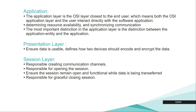Let's take a brief look at application, presentation, and session. As a network engineer, we are not going to interact with those layers directly. The application layer is the closest layer to the end user, meaning the OSI application layer is where users interact directly with the software application. This layer determines resource availability and synchronizes communication. The main job of the application layer is to distinguish between the applications we are sending through our network.